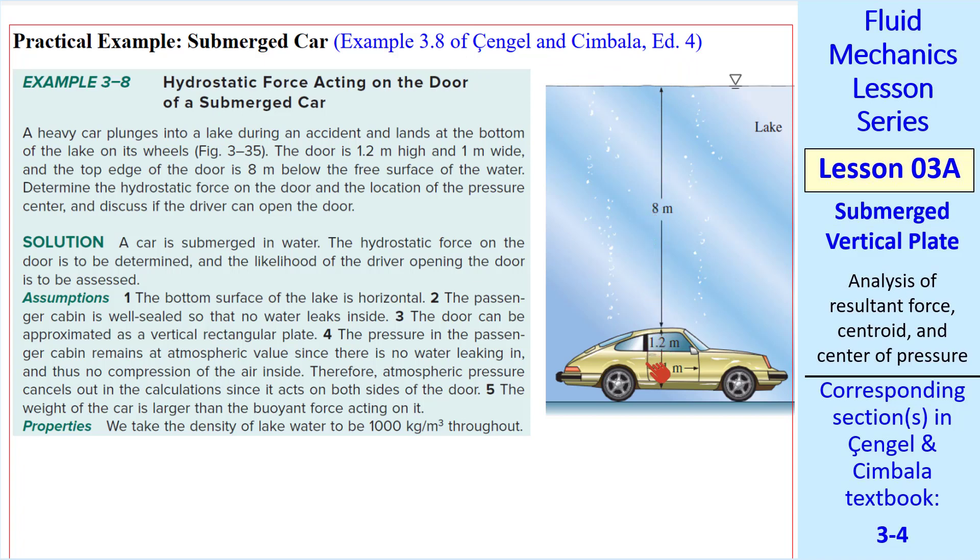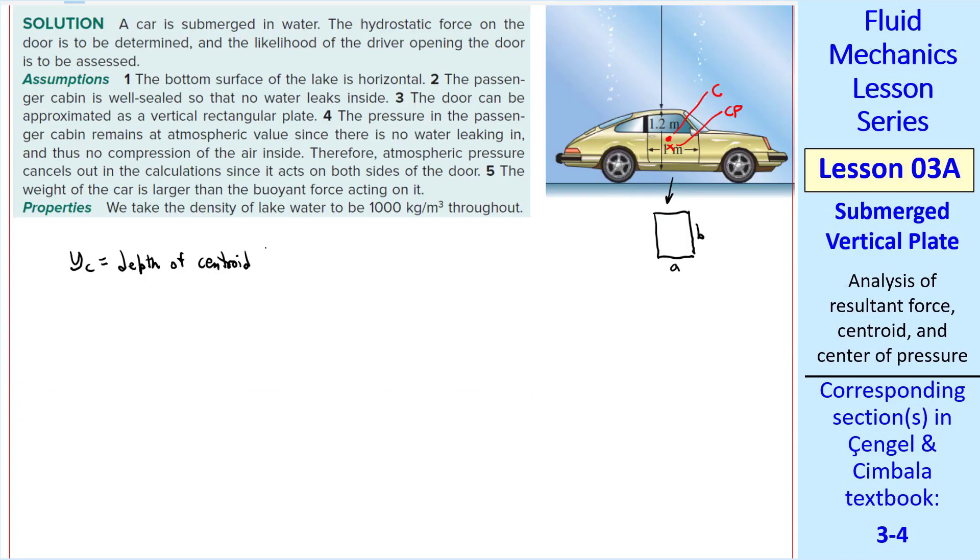Suppose your car plunges into a lake. We'll treat the door as a rectangular plate. Inside the car, the pressure is still atmospheric, but outside the car, the pressure is higher. Let's calculate the hydrostatic force on the door and the location of the center of pressure. I'll label some variables. This is S, 8 meters, C is at the center of the door, and CP is somewhat below C, which we have to calculate. We're approximating the door as a rectangular plate, which is vertical, of dimensions A and B. Of course, we'll use gauge pressure here for convenience. YC, the depth to the centroid, which is S plus B over 2. By the way, in our diagram, B is 1.2 meters, and A is 1.0 meters.